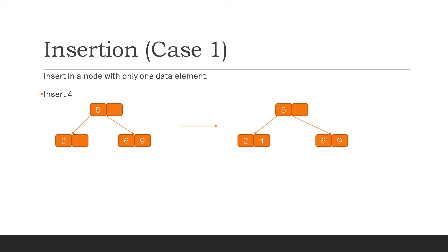So let's move on to the process of insertion. Insertion can have three cases. The first case is when we want to insert in a node with only one data element. For instance, if we want to insert 4 in the 2-3 tree shown on the left-hand side, we compare the value with the parent. Since 4 is less than 5, we move to the left subtree. And since 4 is greater than 2, we put it just on the right side of 2 on the same node. In this way, the value was inserted.